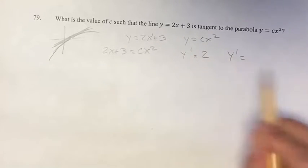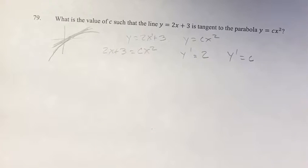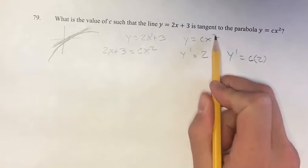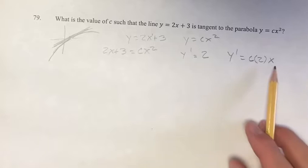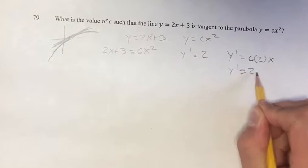The derivative on this side, for cx², we have a power function, so you take the coefficient, bring it out in front, and multiply it by the exponent, which is 2, and your new exponent is 2 - 1, which is 1, so y prime = 2cx.